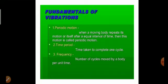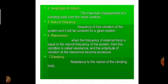The first terminology used in vibrations is periodic motion. When a moving body repeats its motion after some interval of time, that time taken to complete one cycle is called the time period. Frequency is the number of cycles completed by a body per unit time. Amplitude of motion is the maximum displacement of a vibrating body from the mean or equilibrium position.